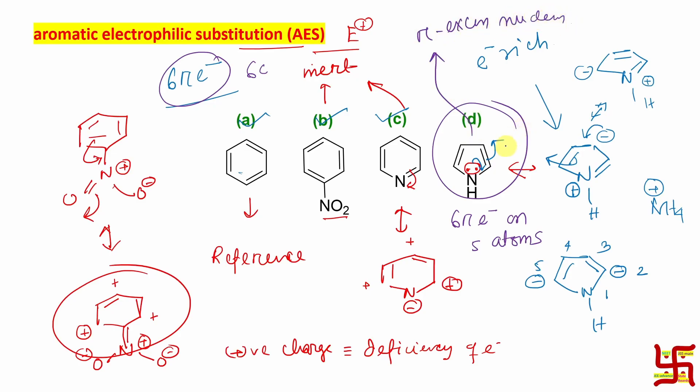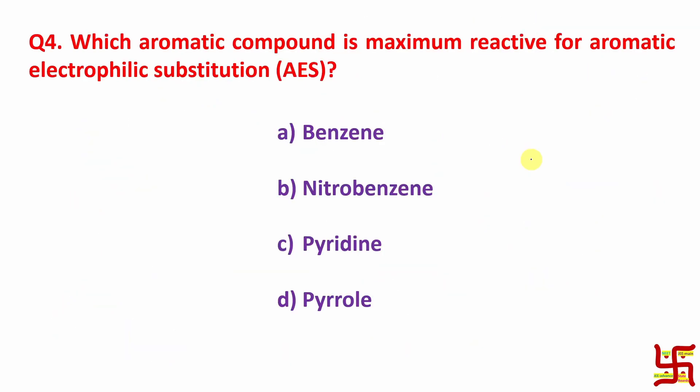So, that's why it is maximum reactive for aromatic electrophilic substitution. Lots of properties are there regarding this because of its enhanced reactivity towards aromatic electrophilic substitution. So, today's answer of this question is maximum reactive is pyrrole.